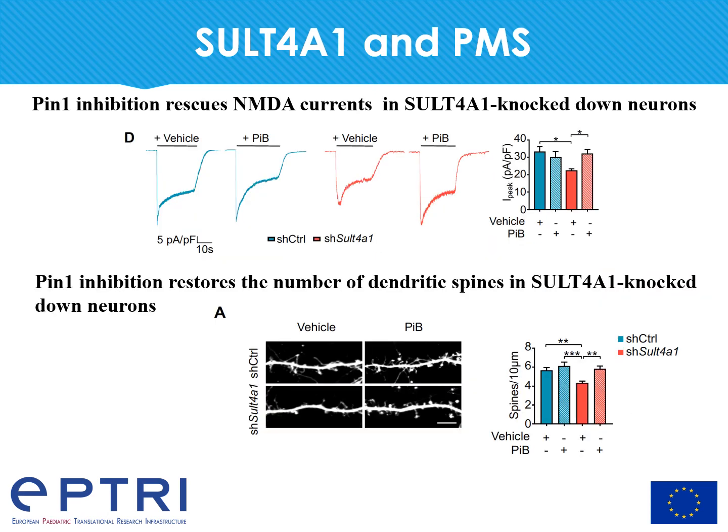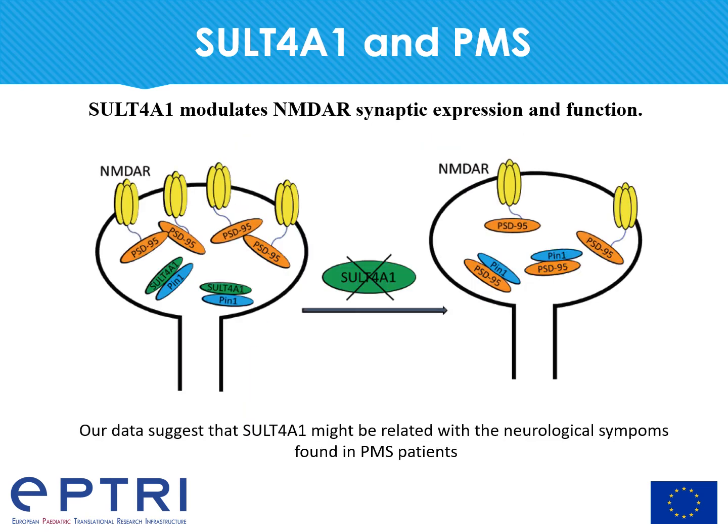To test our hypothesis, we treated neurons with PIB, a specific inhibitor of PIN1, and found that PIB treatment was able to completely rescue both NMDA-mediated currents and dendritic spine numbers in SULT4A1 knockdown neurons.